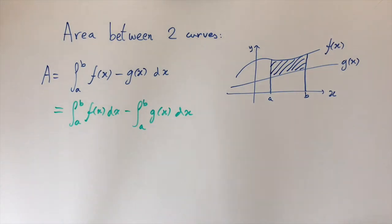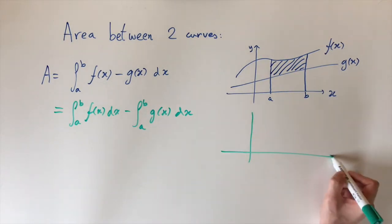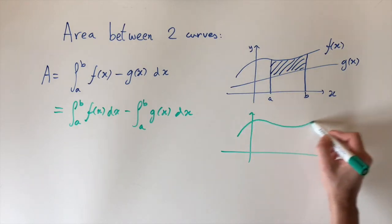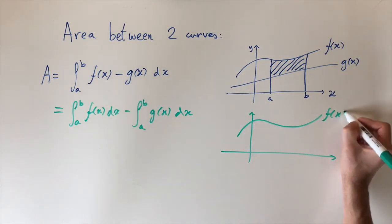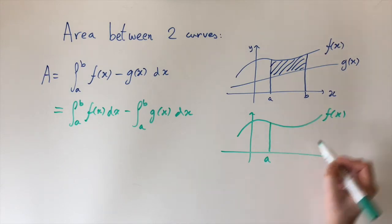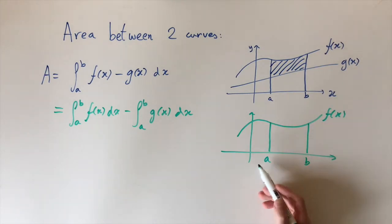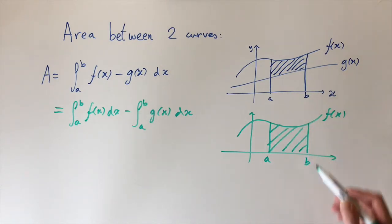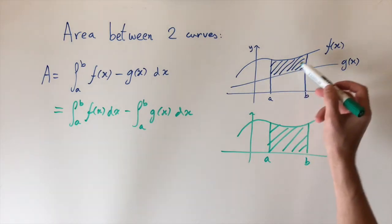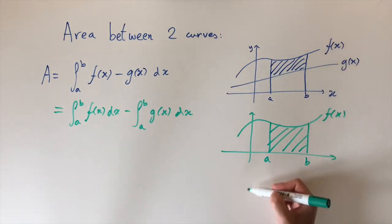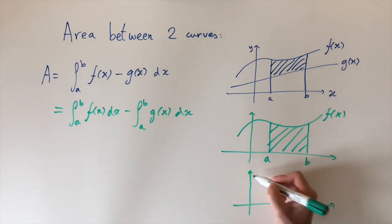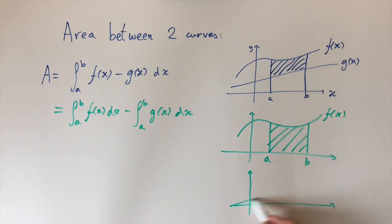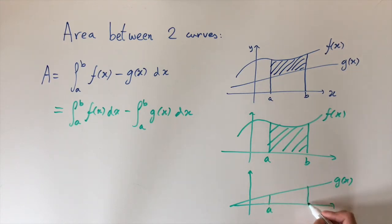Let's think about this geometrically by sketching the two functions separately. If we replicate f(x) and sketch on the limits a and b, then integrating f between a and b gives us the whole region between f and the x-axis. If we just want the upper region, we subtract off the integral of g. Sketching g as a straight line, integrating g between a and b gives us that lower region.